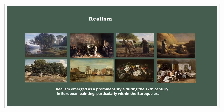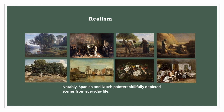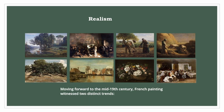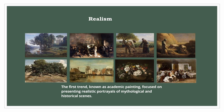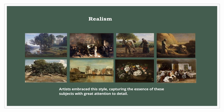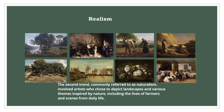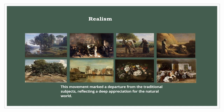Realism emerged as a prominent style during the seventeenth century in European painting, particularly within the Baroque era. Notably, Spanish and Dutch painters skillfully depicted scenes from everyday life. Moving forward to the mid-nineteenth century, French painting witnessed two distinct trends. The first trend, known as academic painting, focused on presenting realistic portrayals of mythological and historical scenes, capturing the essence of these subjects with great attention to detail. The second trend, commonly referred to as naturalism, involved artists who chose to depict landscapes and various themes inspired by nature, including the lives of farmers and scenes from daily life, reflecting a deep appreciation for the natural world.